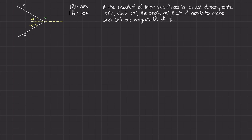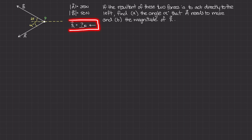We know that this resultant vector R is going to have some magnitude, which we don't know yet, and that's going to be in newtons. But we already know its direction — it's going to act directly to the left. So if R needs to act directly to the left, we need to figure out what angle alpha is, that this force vector A needs to make with the horizontal, in order to ensure the resultant force acts to the left.